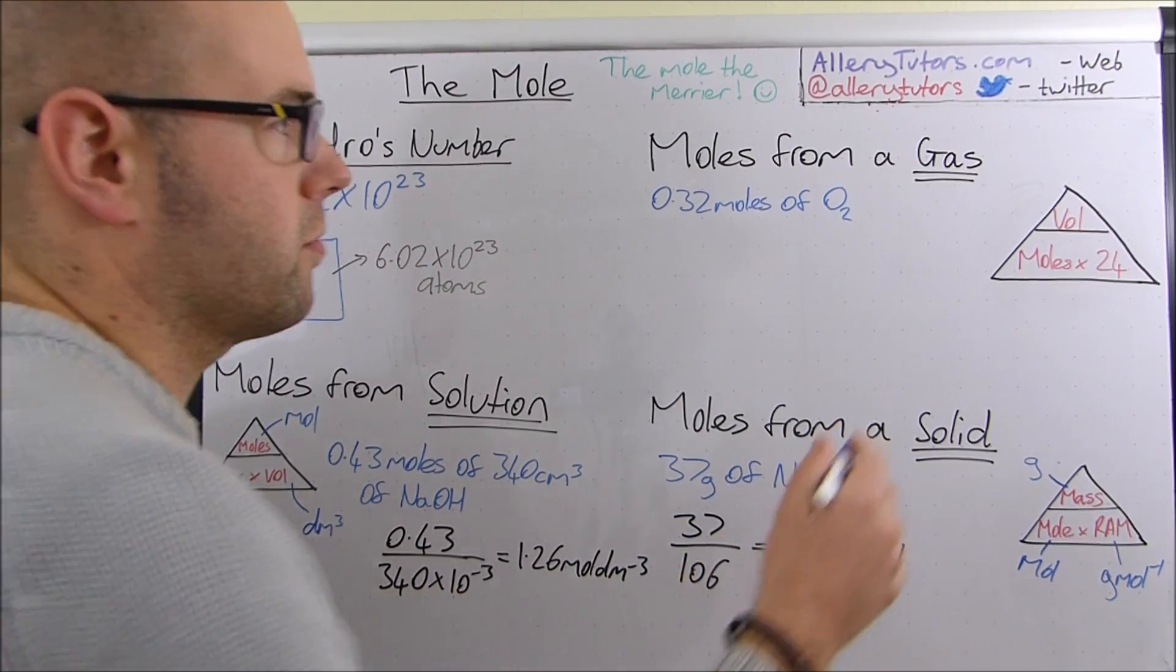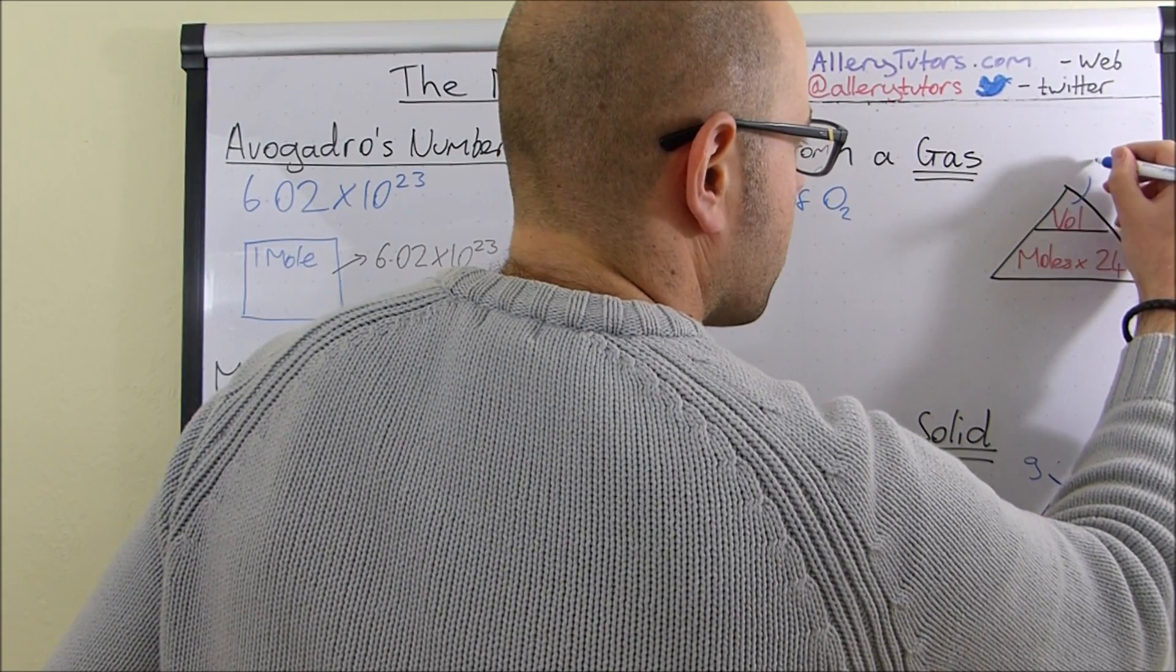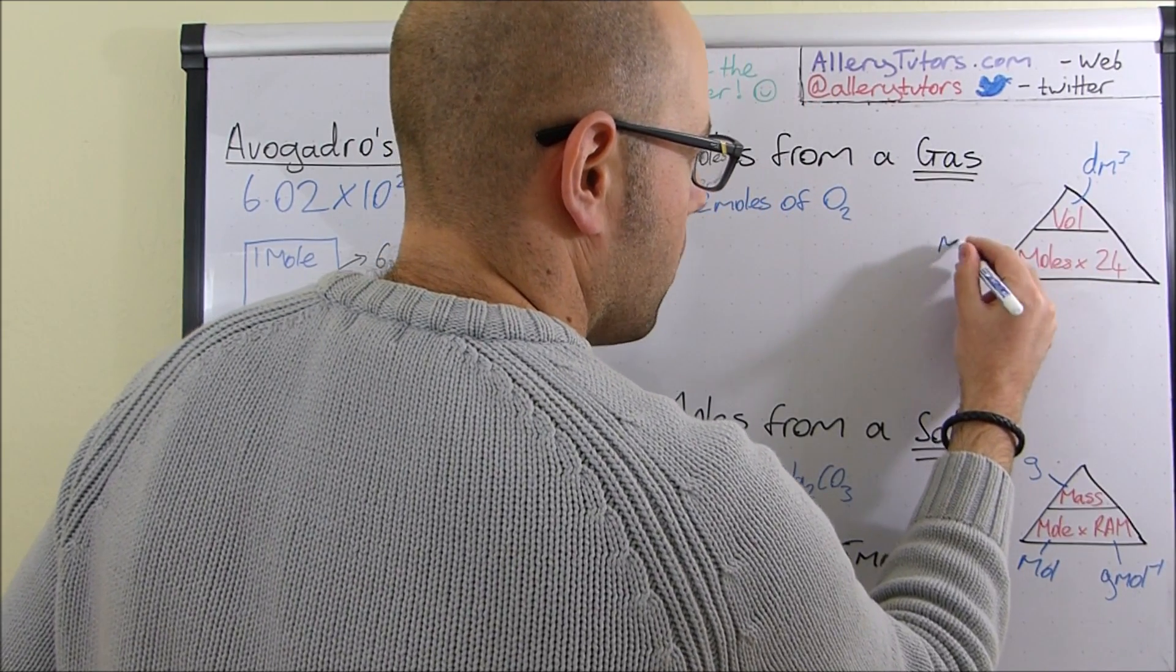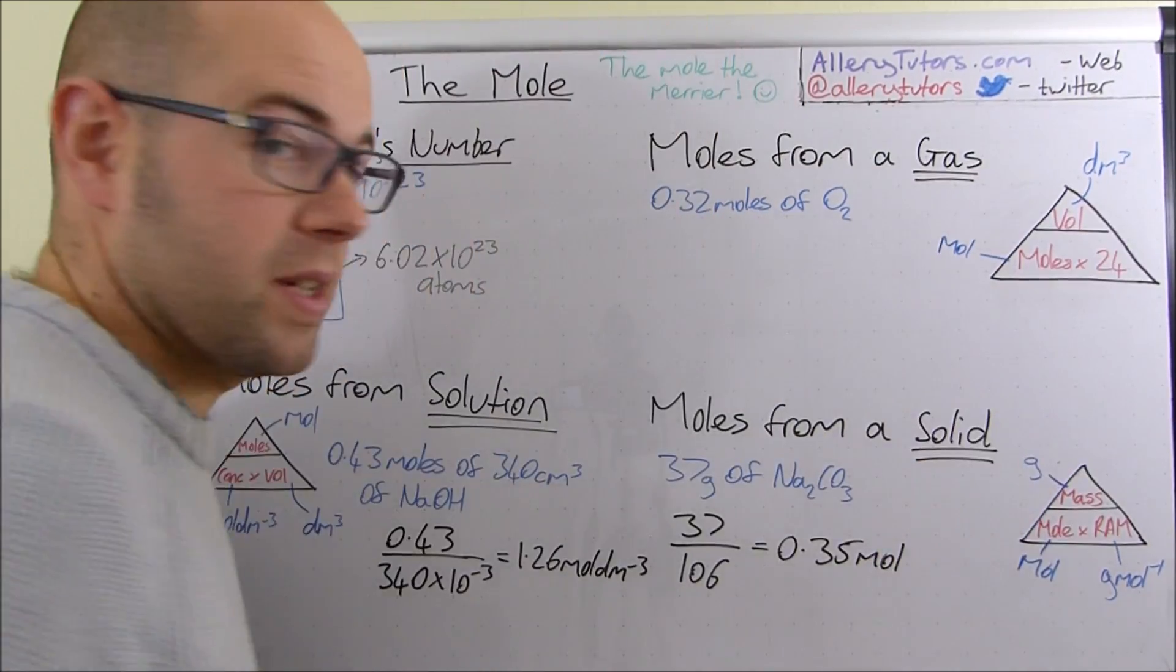So let's just, again, quickly go through what we've got. Volume has got to be in decimetres cubed. There it is again. Moles as in mole. And the 24 is just 24. Okay.